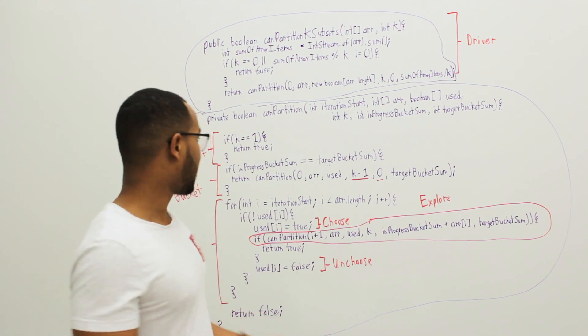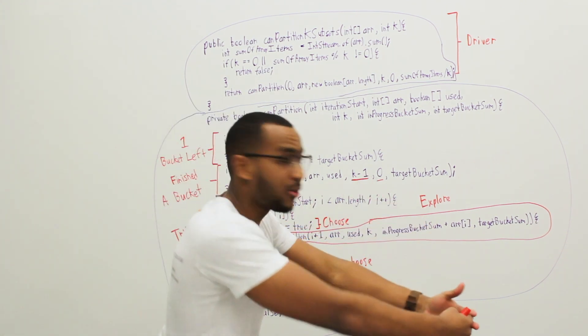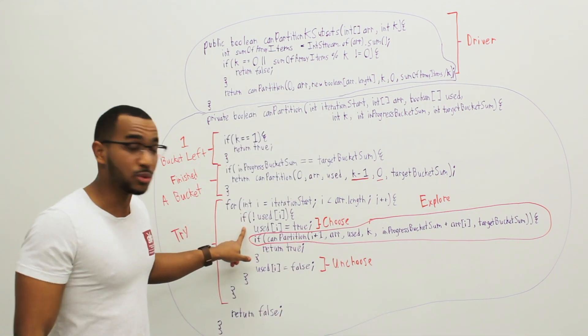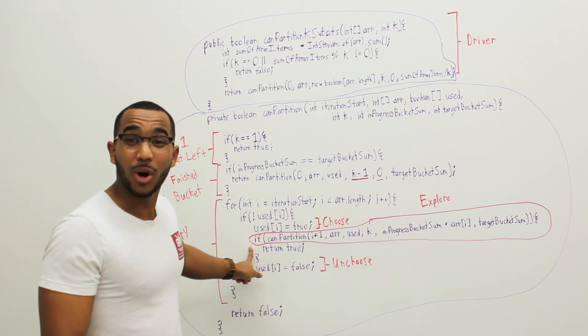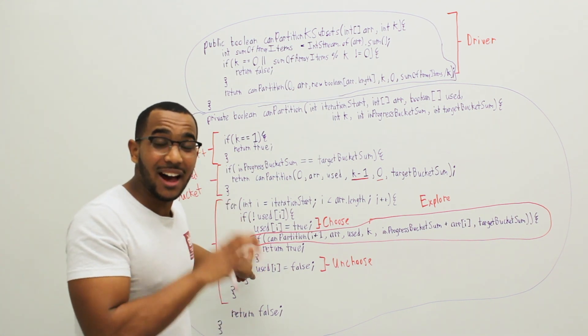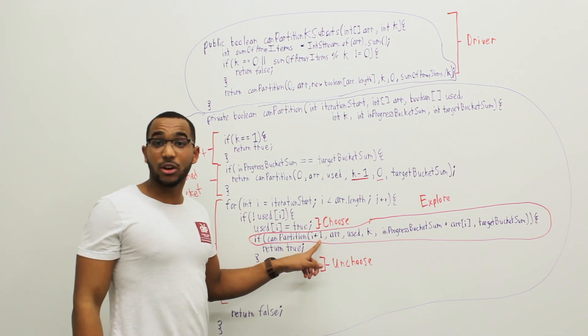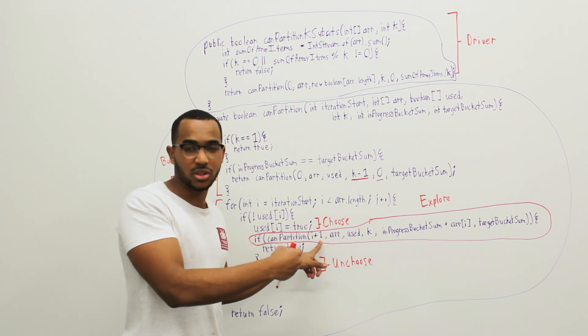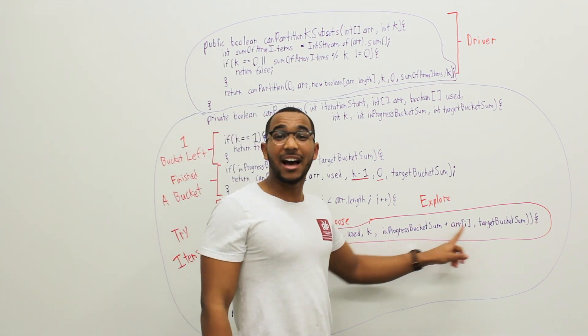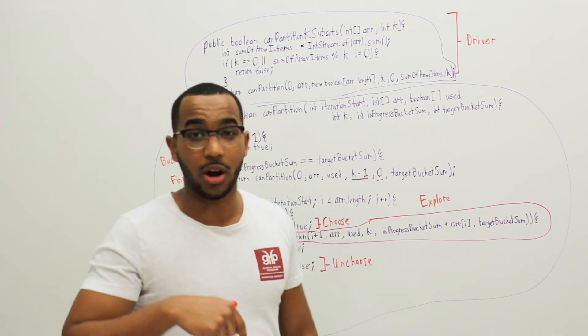Now we try every item from iteration start to the end of the array. If the item has not been used, mark that item as used and then try to partition with that item added. Try to continue partitioning with that item added. We increment the iteration start by 1 because we want to start after this item because we just used it. And we add the item's value to the bucket sum that we're working on.